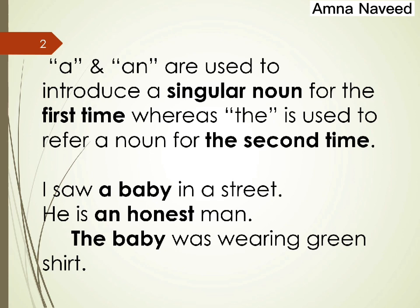I will start with the use of a and an because their use is quite simple and easy. A and an are indefinite articles used to introduce a singular noun, to talk about someone or something for the very first time, or to talk about something in general. For example, 'I saw a baby in a street.' Here 'a baby' is a singular countable noun and you are introducing the baby for the very first time. When you want to talk about the same baby again you say 'The baby was wearing a green shirt.'